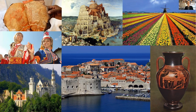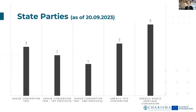When talking about cultural heritage and its protection, there are conventions that protect cultural heritage on an international basis. There's the Hague Convention of 1954, which has two protocols — the first from 1954, the second from 1999. There's also the UNESCO Convention from 1970, which we've briefly touched upon, and the UNESCO World Heritage Convention. As of 2023, the UNESCO 1970 Convention was ratified by 143 state parties and the UNESCO World Heritage Convention by 195.